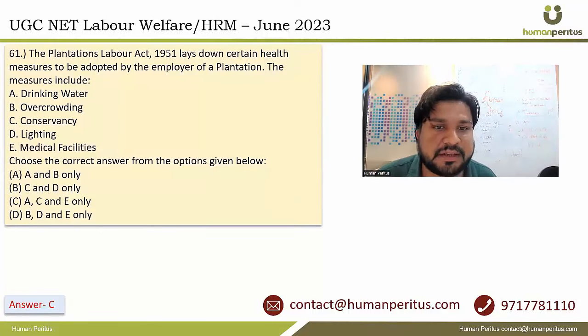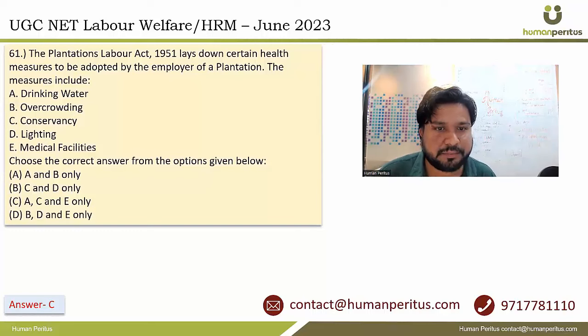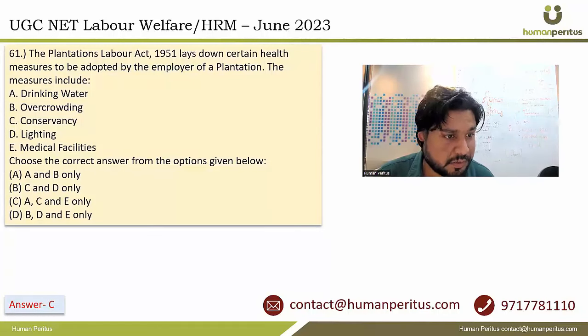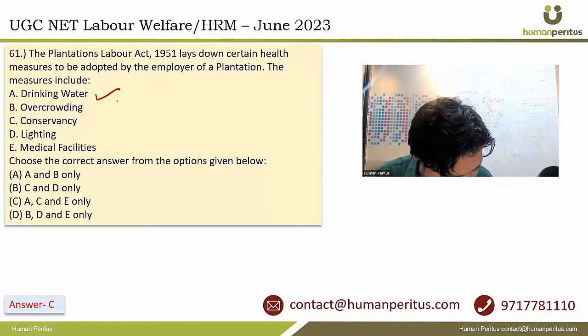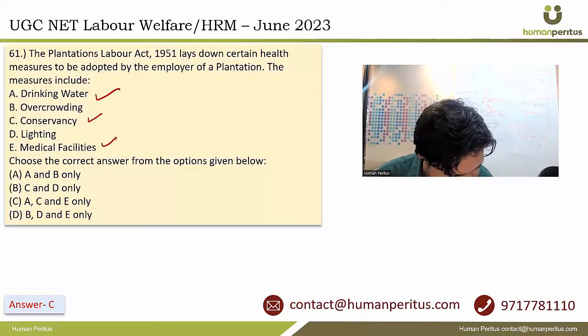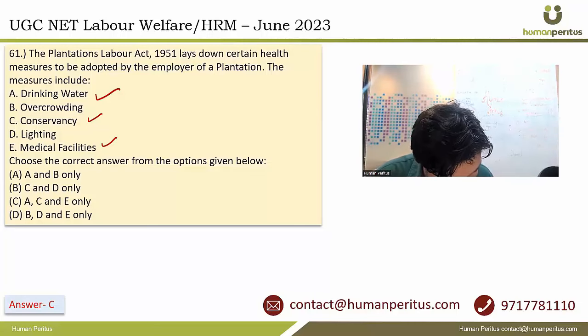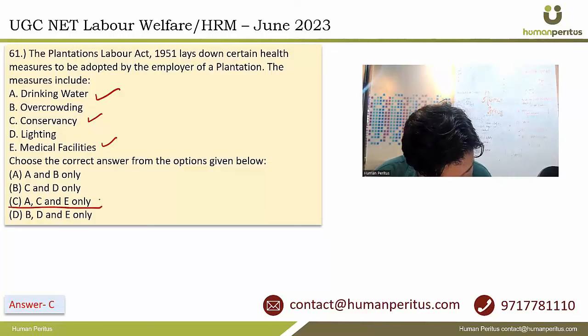The Plantation Labour Act lays down certain health measures to be adopted by the employer of a plantation. These measures include drinking water, conservancy, and medical facilities. Therefore the correct answer is A, C and E, which is option C.